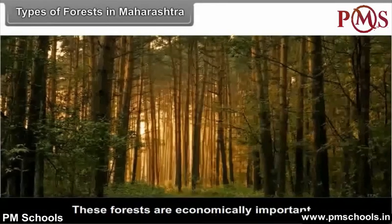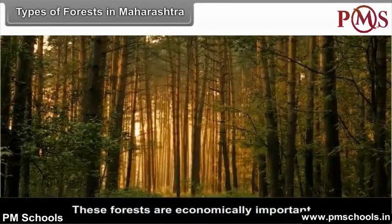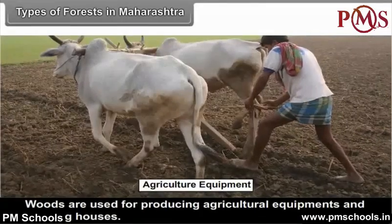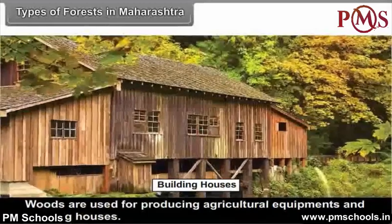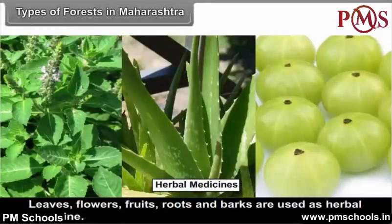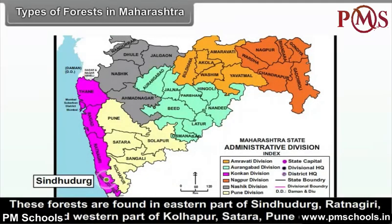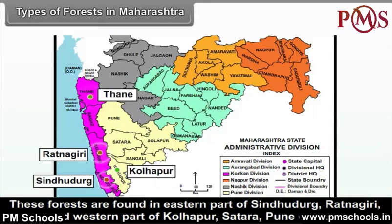These forests are economically important. Woods are used for producing agricultural equipment and building houses. Leaves, flowers, fruits, roots and barks are used as herbal medicine. These forests are found in the eastern part of Sindhudurg, Ratnagiri, Thane and western parts of Kolhapur, Satara, and Pune districts.